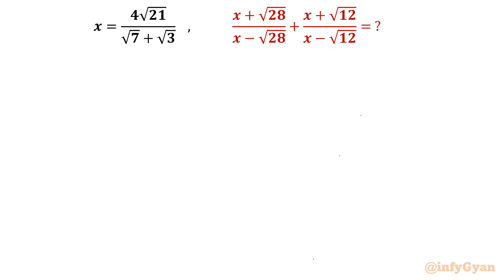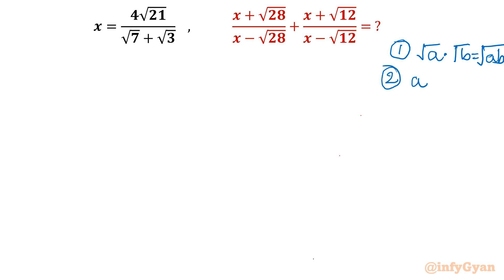I will begin by writing two properties of radicals which are very useful. First: √a × √b = √(ab). Second: a × √b = √(a²b). These are the most important properties we will use here.